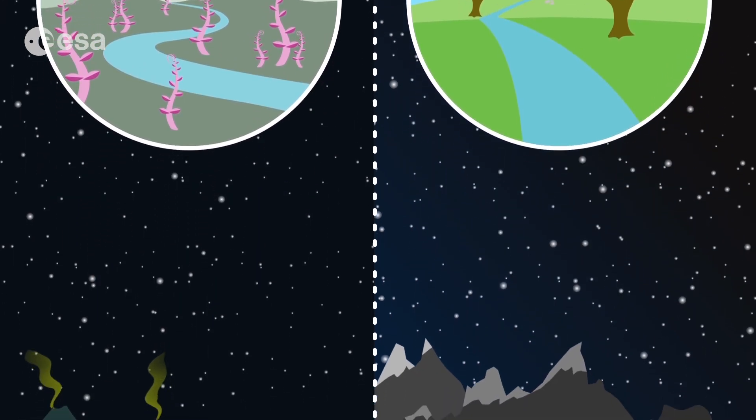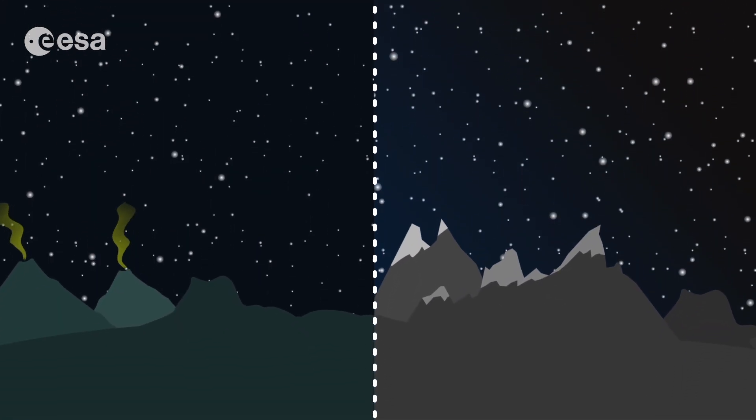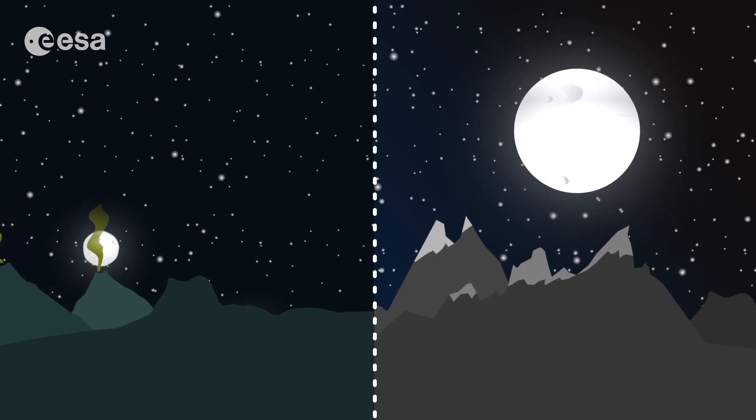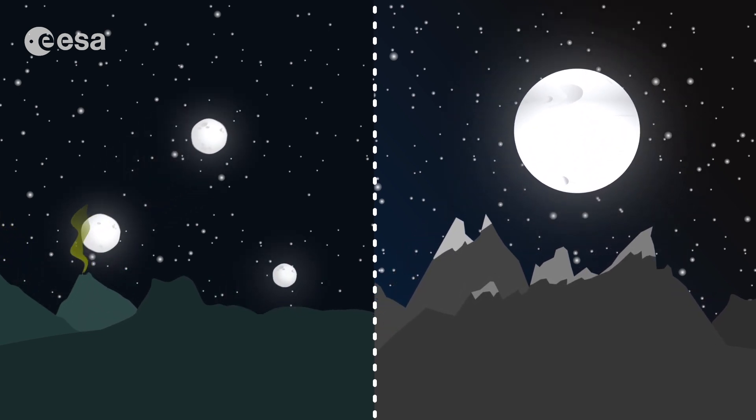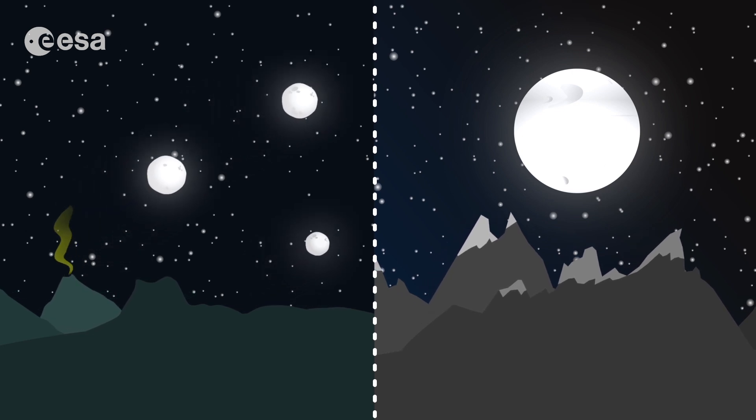That is why Earth reminds me of home and I like it so much. You have one big moon in the sky, while we have three small ones at Aliyo. Cool, isn't it?